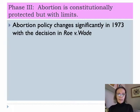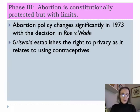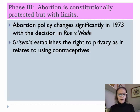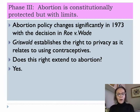Abortion policy changes significantly in 1973 with the decision in Roe v. Wade, which provides a constitutional right to obtain an abortion, ushering in phase three — abortion is constitutionally protected, but with limits. Relating back to Griswold v. Connecticut, which established the right to privacy regarding contraceptives, the question in Roe v. Wade is: does that right to privacy extend to abortions? The Supreme Court answered yes. Let's take a look at the facts of Roe v. Wade.